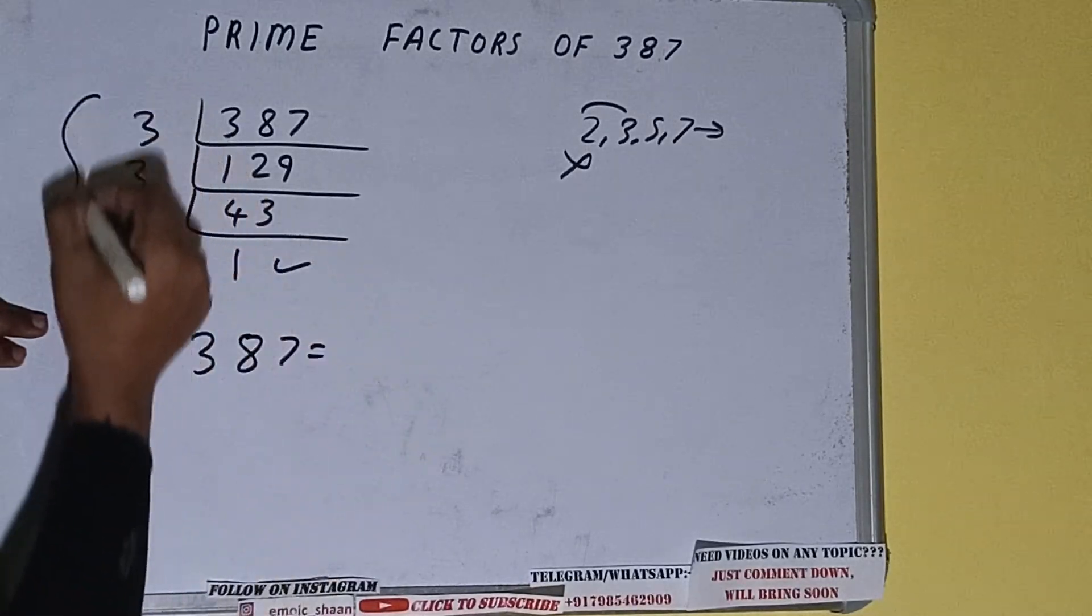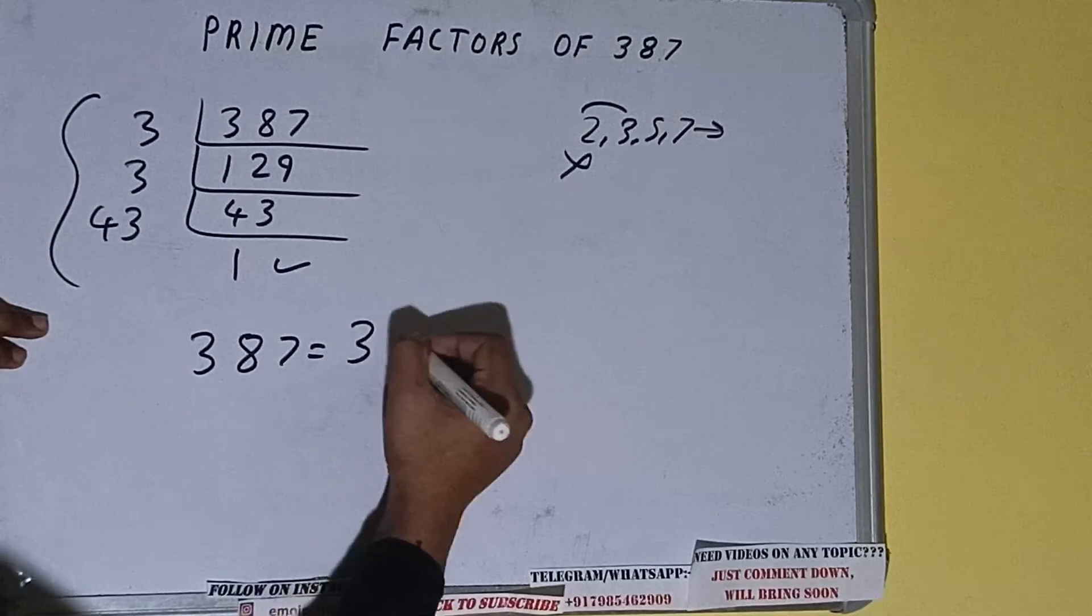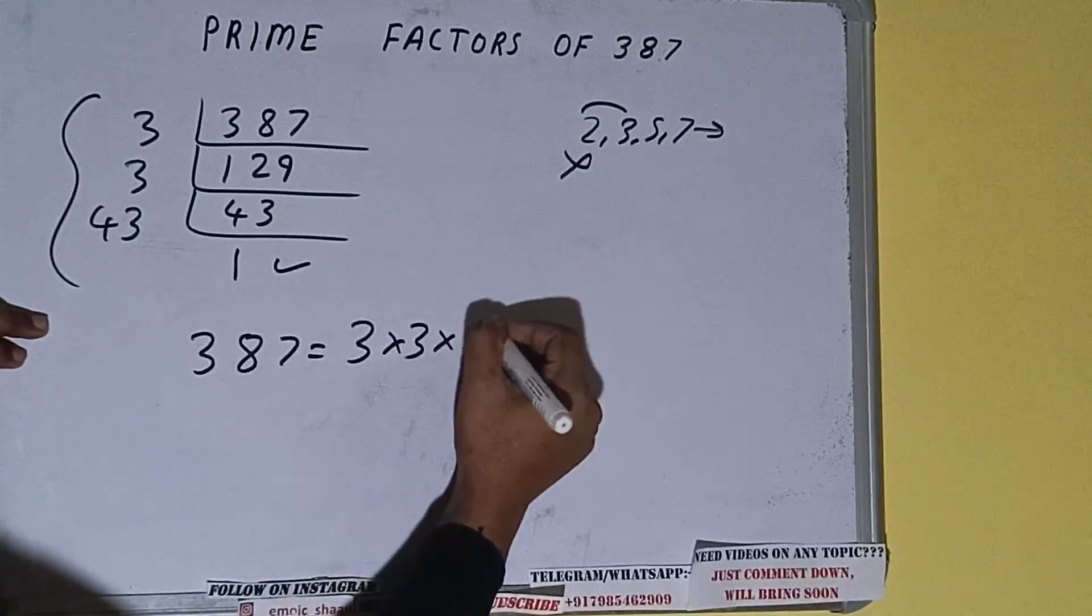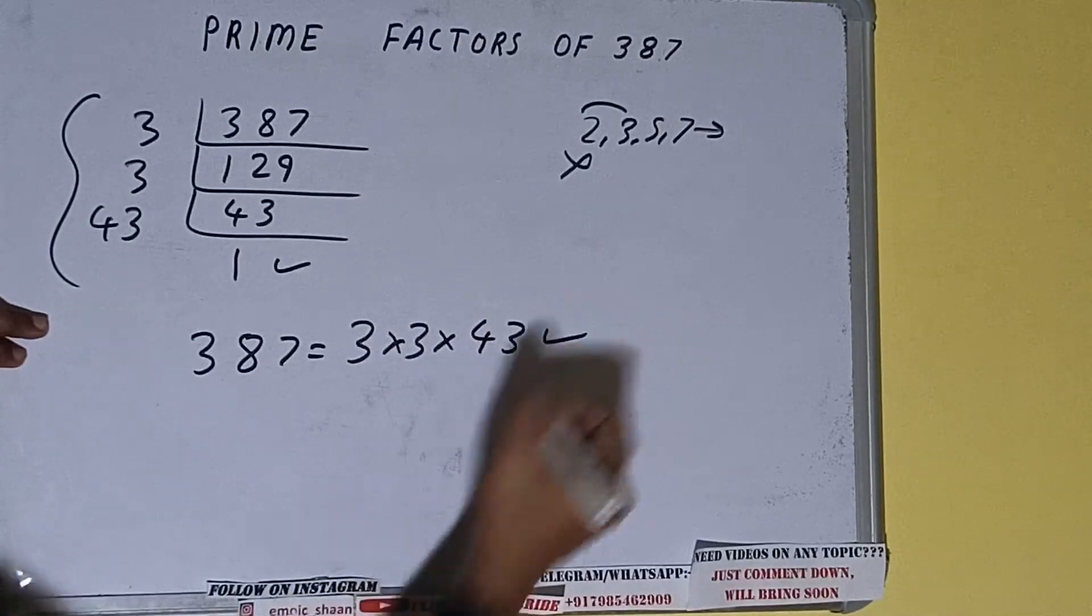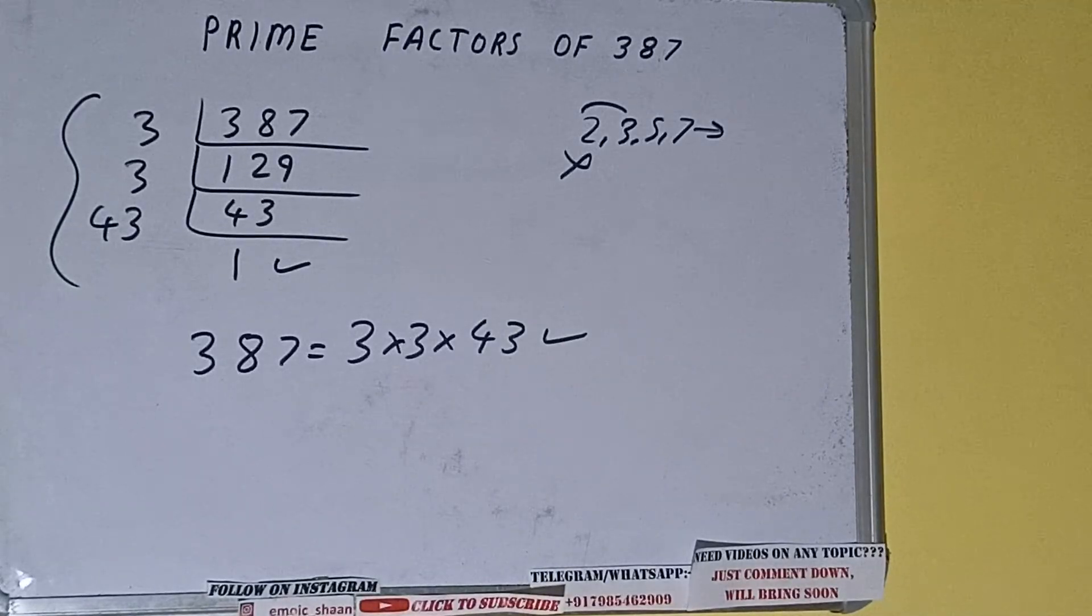That is 3 times 3 times 43, and that will be the answer. So this is all about prime factors of 387. If you found the video helpful, please hit the like button, do consider subscribing, and thanks for watching.